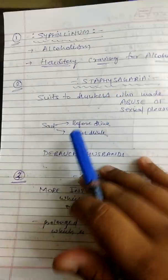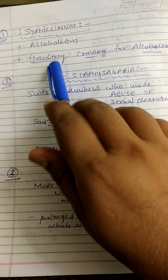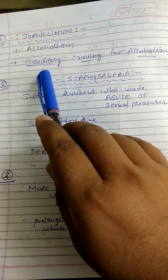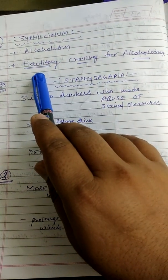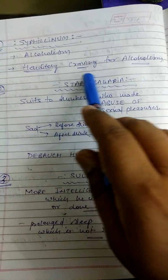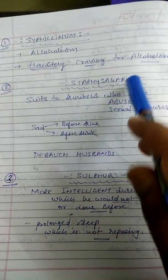Ab ek ek medicines pe jate hain. Syphilinum — alcoholism mein kaafi acha effect hota hai: hereditary craving for alcoholism.